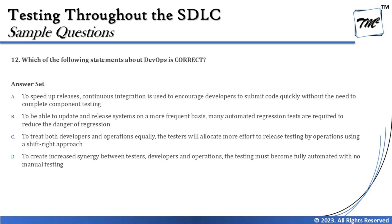Option A says: to speed up releases, continuous integration is used to encourage developers to submit code quickly without the need to complete component testing. Component testing is a part of the CI/CD pipeline. The major activities in the pipeline include the smoke test or build verification test, component test, static analysis, integration test, and regression testing. We cannot eliminate component testing from the DevOps pipeline.